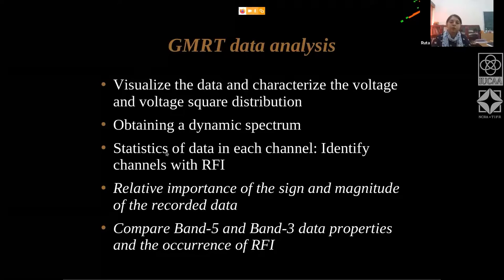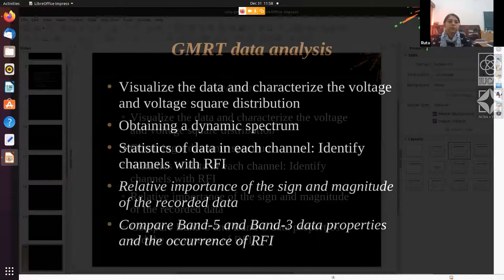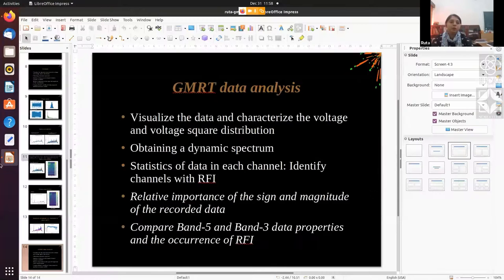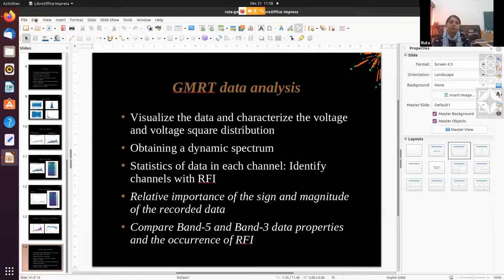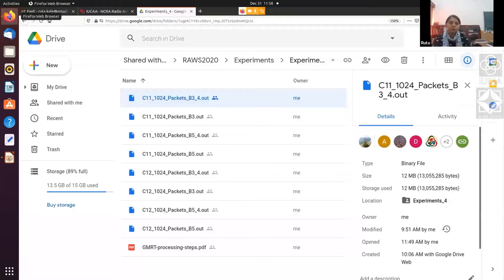I just showed you a very brief snapshot of what you are likely to see in the data. This was all shown at band three; there are also band five data and the characteristics in band five can be quite different, as you will see.